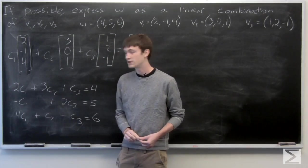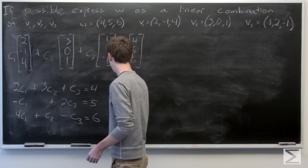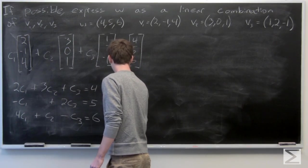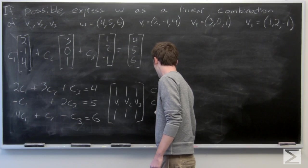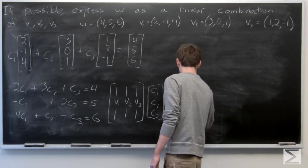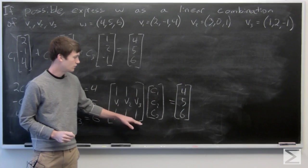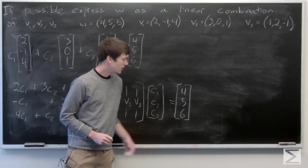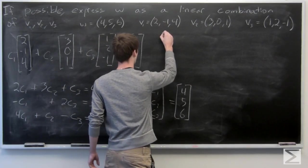So we have a system of equations in terms of c1, c2, and c3. And we know that we can write this as a matrix. Our columns are vectors v1, v2, and v3, and that's multiplied by our vector of unknowns c1, c2, and c3. And that equals (4, 5, 6), which we know we can solve by just solving the augmented matrix.